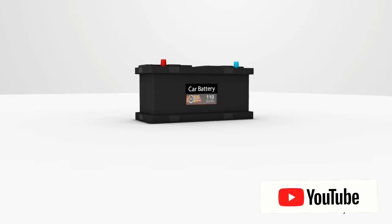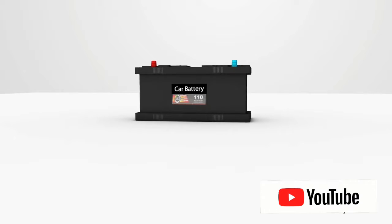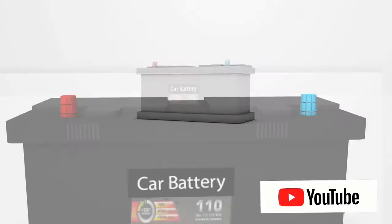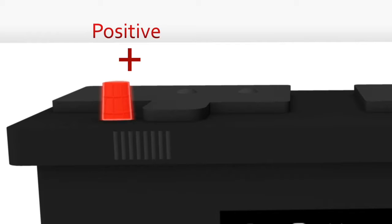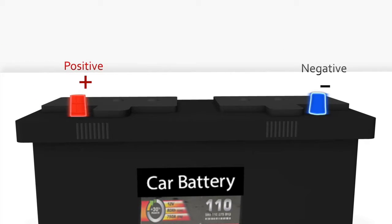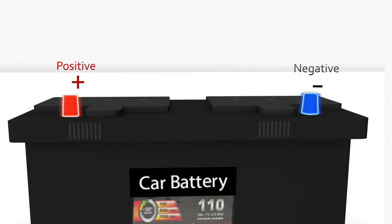This video shows the basic principle of how car batteries work. A car battery has two terminals: a red positive terminal and a blue negative terminal. You can easily notice these terminals when you see a car battery.